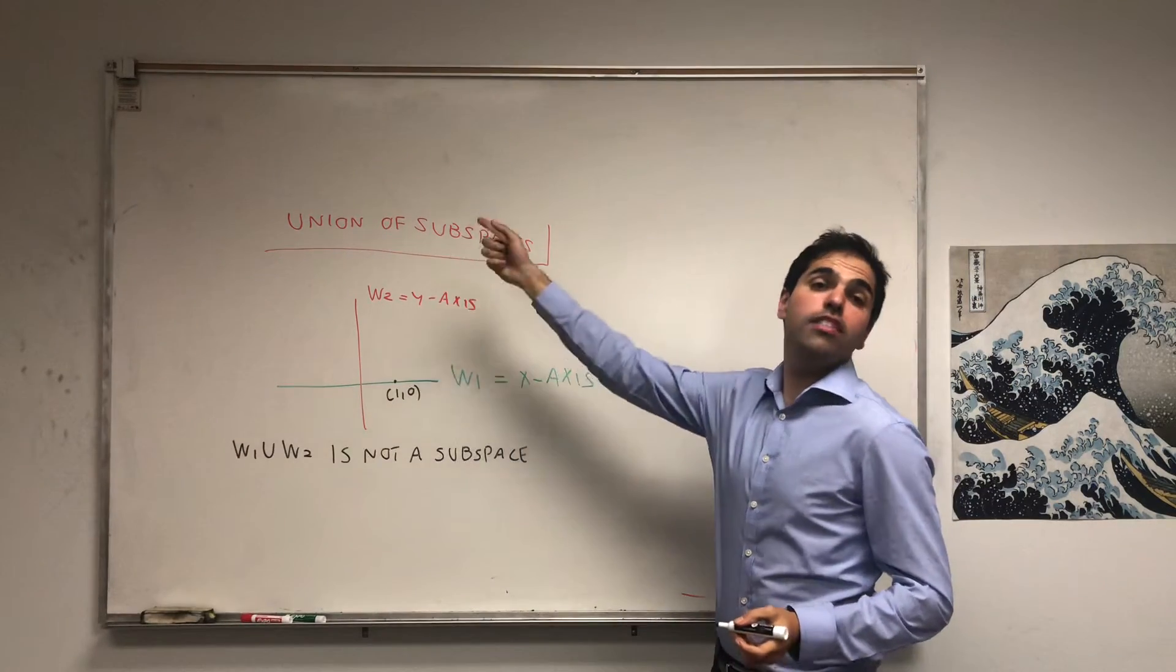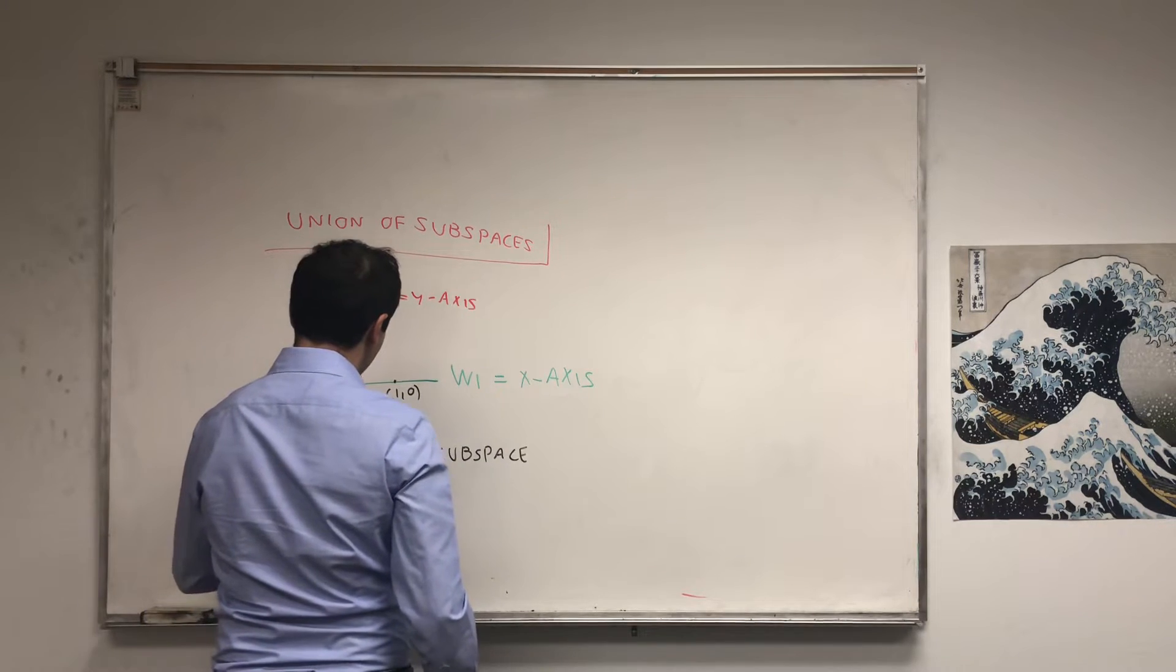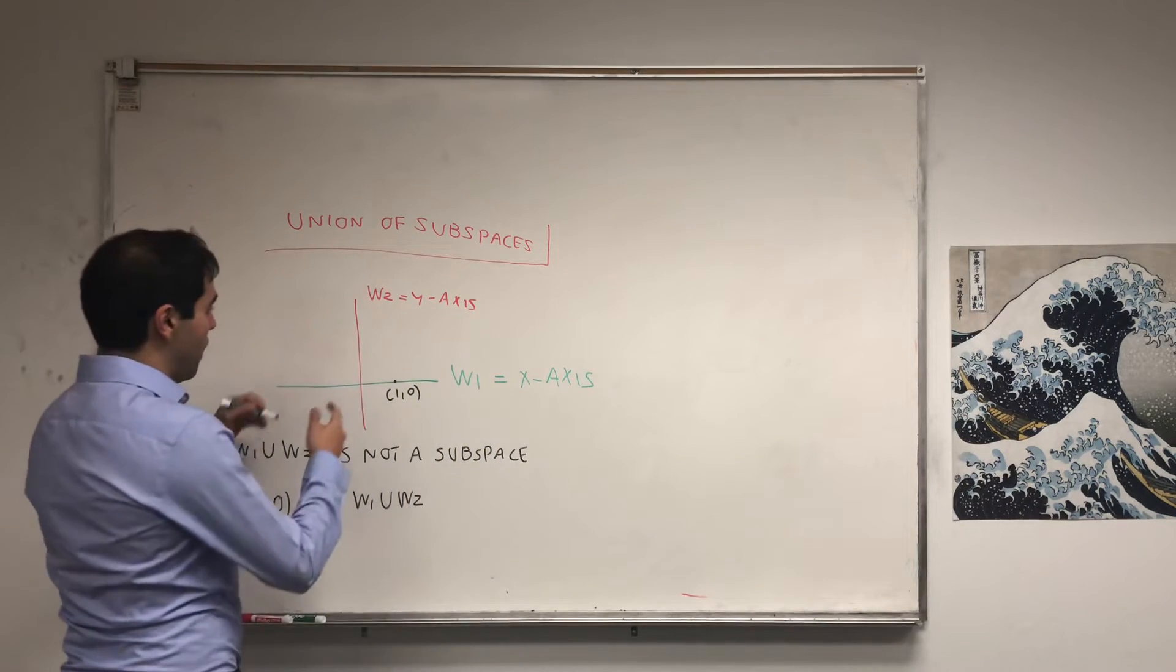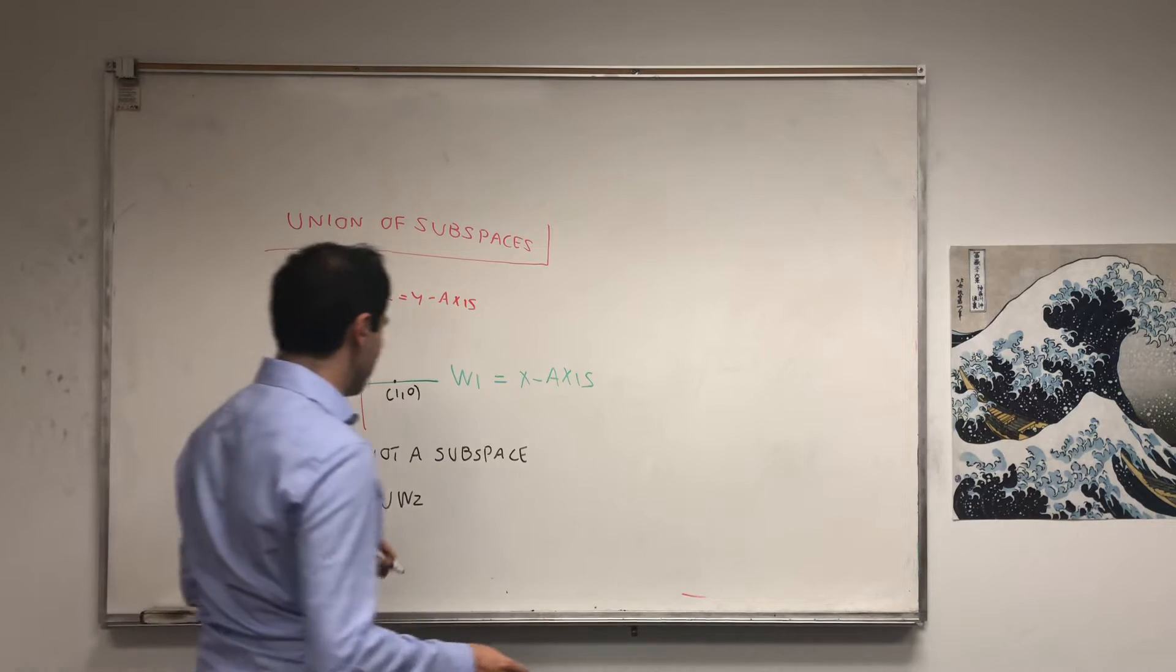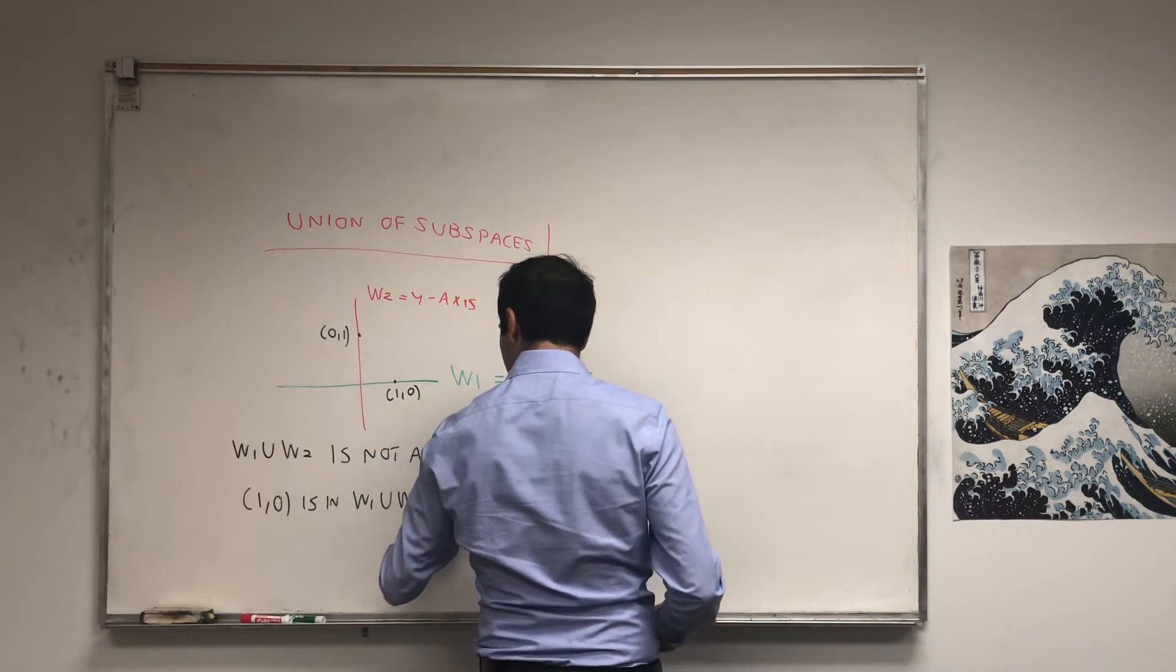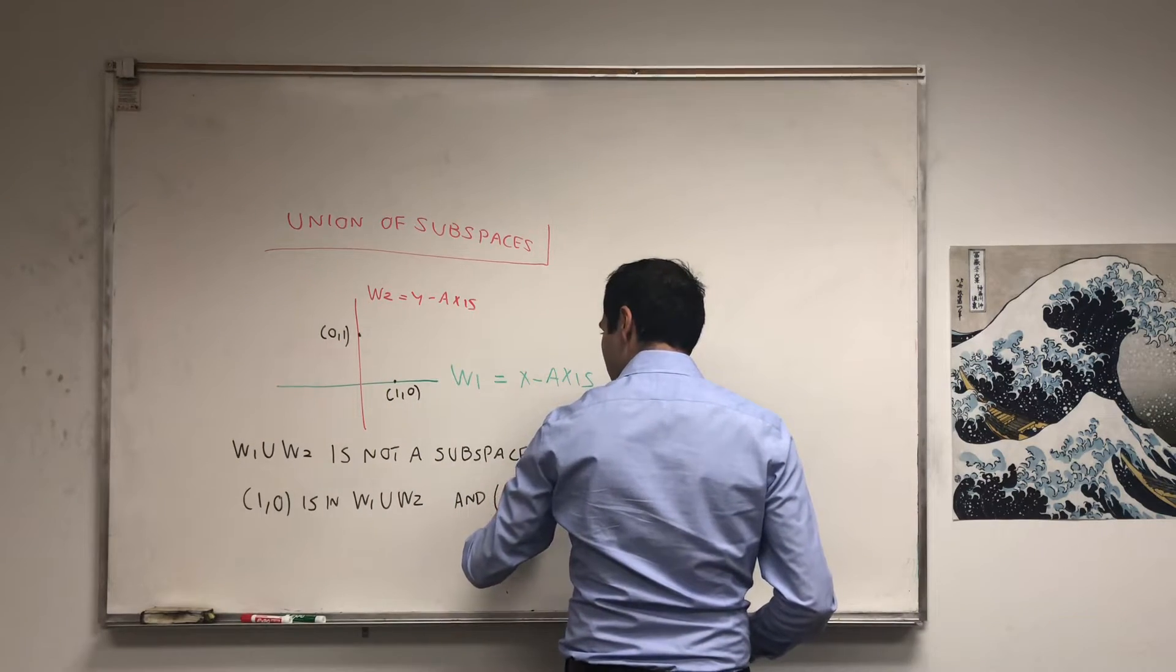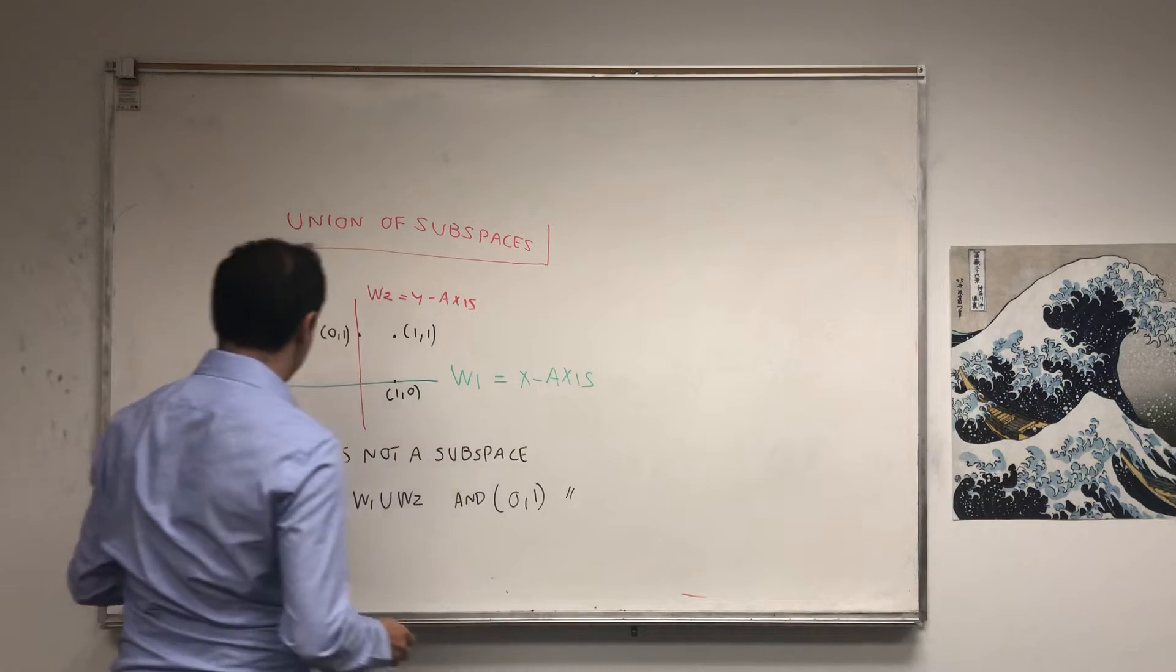So it's in either one of them. So (1,0) is in W1 union W2, and (0,1) is also in W1 union W2, because again, it's in one of them. But if you take the sum, then it's not in it.